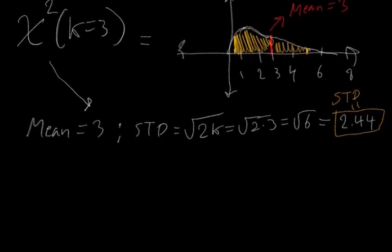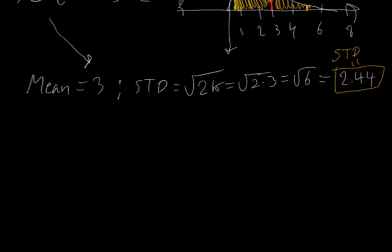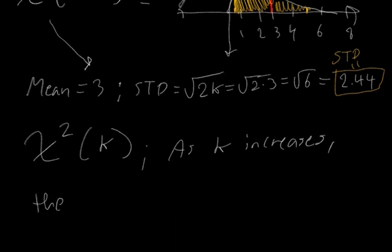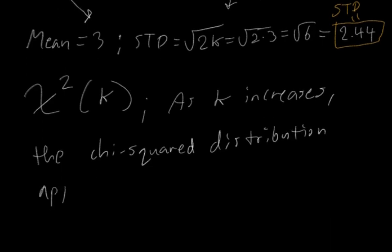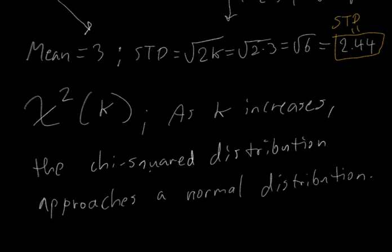For a chi-squared distribution with k degrees of freedom, as k increases, the chi-squared distribution approaches a normal distribution. I hope this video was helpful in helping you understand the chi-squared distribution. Thanks for watching.